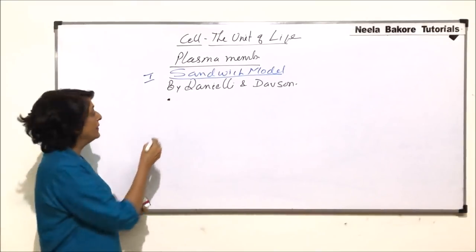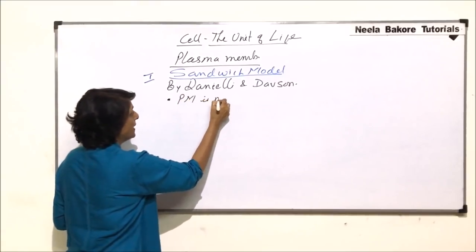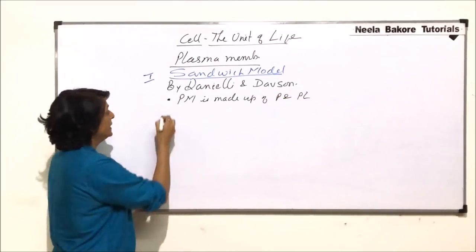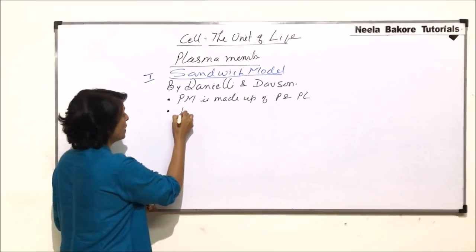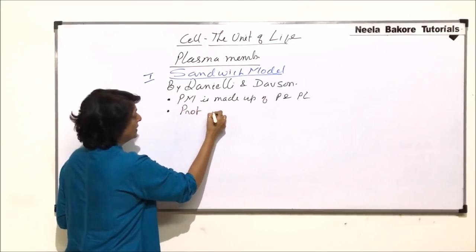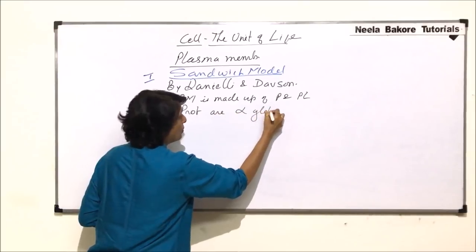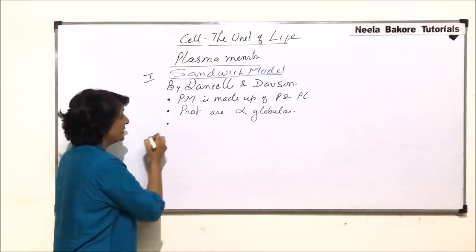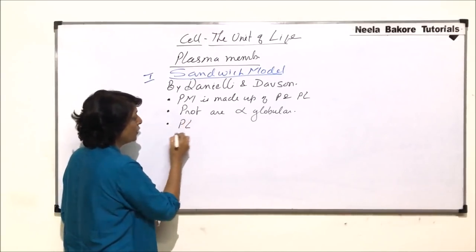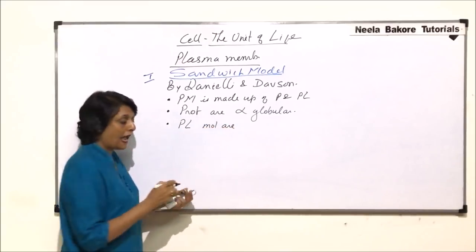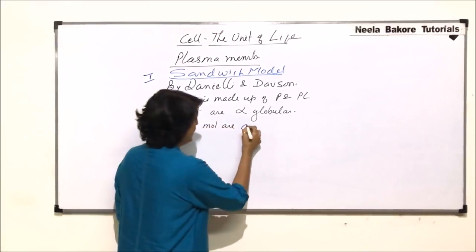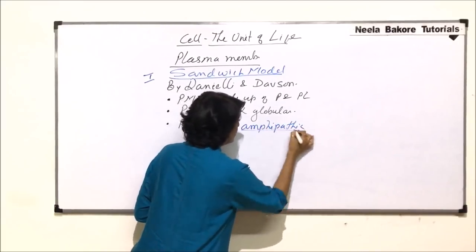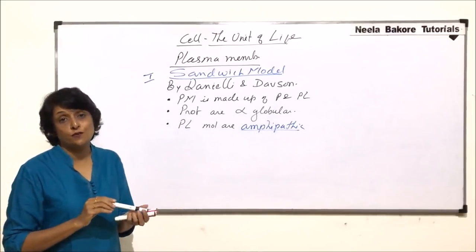The first point was that plasma membrane is made up of proteins and phospholipids. The second information they gave was about proteins — proteins are alpha globular proteins. Regarding phospholipids, they stated that phospholipid molecules are amphipathic. This term 'amphipathic' was given by them for the phospholipid molecules.